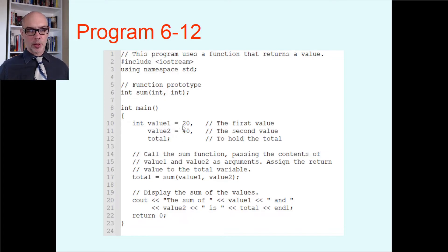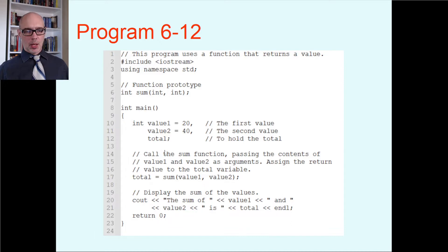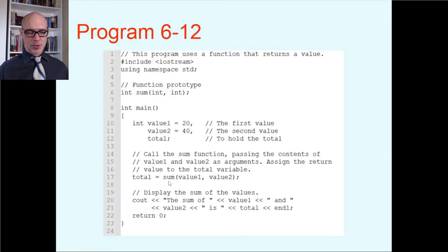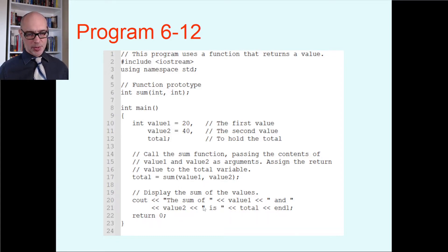In main, value1 holds 20 and value2 holds 40. There's a total variable to store the result. On line 17, the function call calls sum passing those values as arguments, then assigns the return value to the total variable. This jumps into the sum function, does its job, comes back with a number, and assigns it into total.